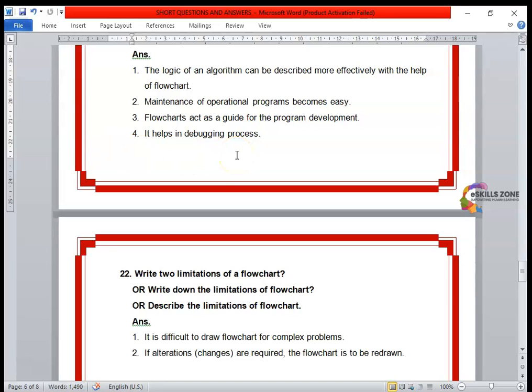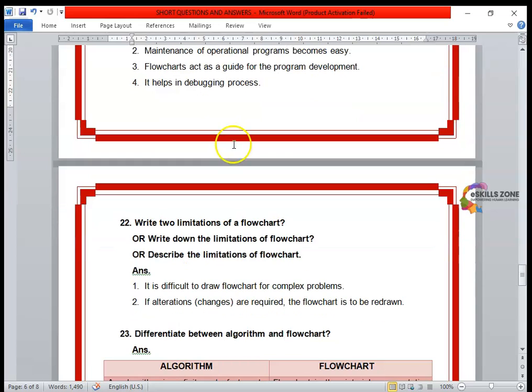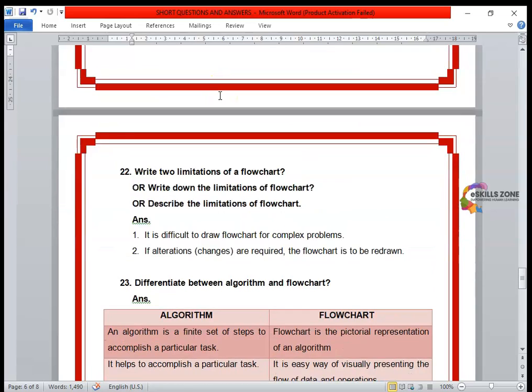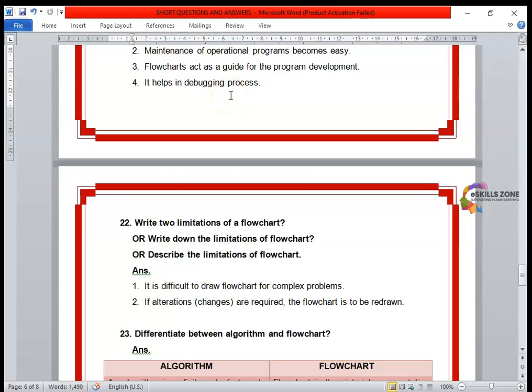Debugging process is already discussed with you, that the process of finding and removing errors from a computer program is called debugging. Debugging is a very important process when making a program. For a successful program execution, debugging is always required.